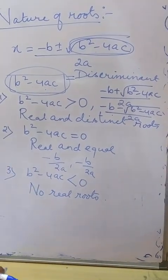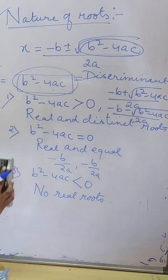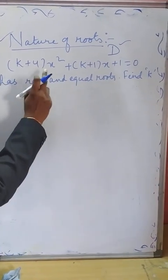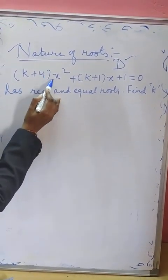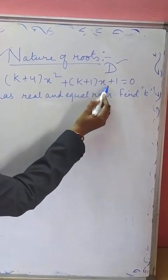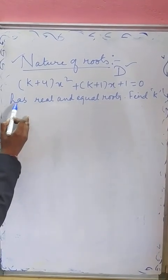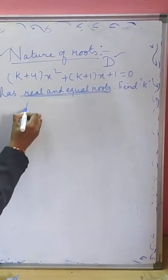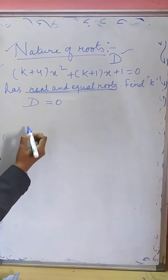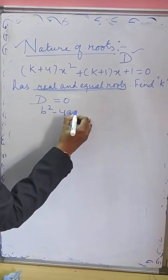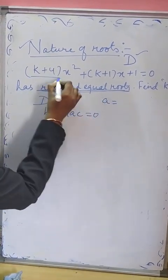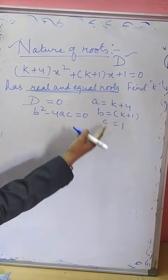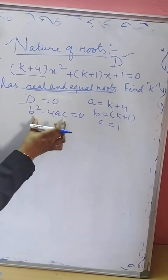Based on the discriminant D, we are going to find the value of k. The given equation is (k+4)x² + (k+1)x + 1 = 0, and this equation has real and equal roots. We need to find the value of k. Since the roots are real and equal, D = 0, meaning b² - 4ac = 0. Here a = k+4, b = k+1, and c = 1.